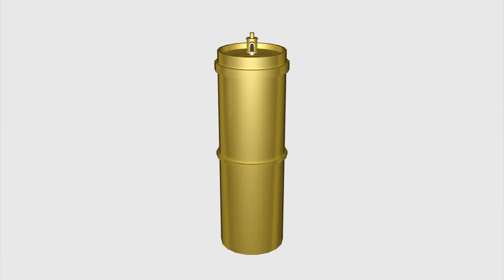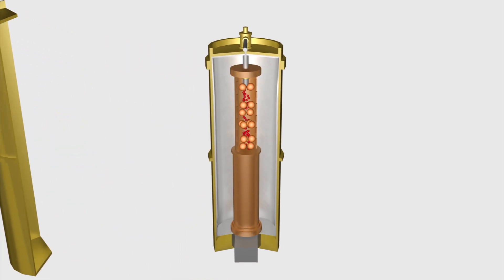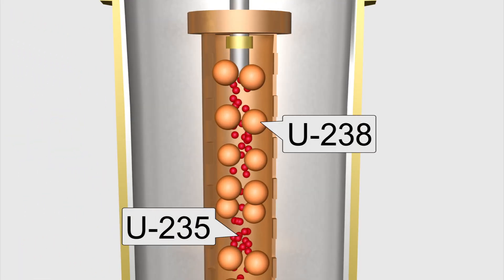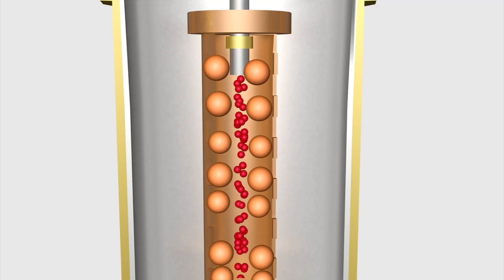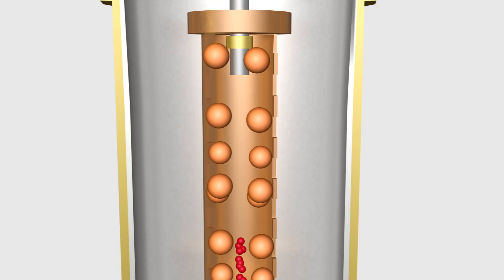Most enrichment plants today use centrifuges. As a centrifuge spins, the heavier uranium-238 is forced towards the walls, while the uranium-235 stays in the centre.